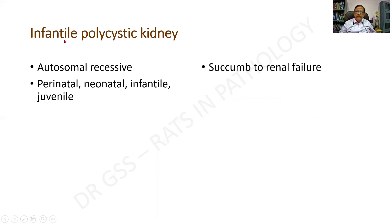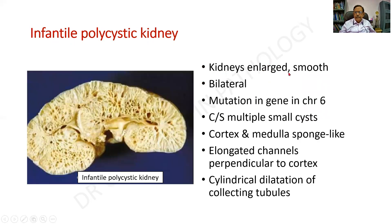The infantile polycystic kidney occurs in infancy or in slightly older children and is autosomal recessive in nature — it can be perinatal, neonatal, infantile or juvenile, and the patient can succumb to renal failure. The external contour of the kidney is smooth, but the cut surface shows loss of corticomedullary differentiation with predominantly radially spaced cystic lesions. When cut across, small cystic spaces are visible involving the entire cut surface. The kidneys are enlarged, smooth, and bilateral.